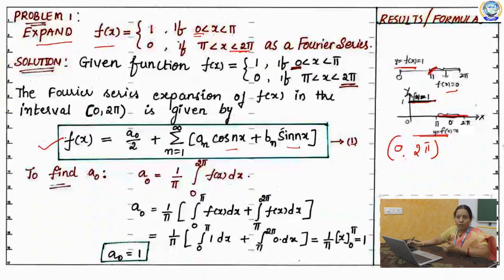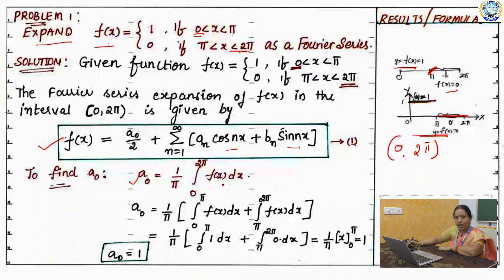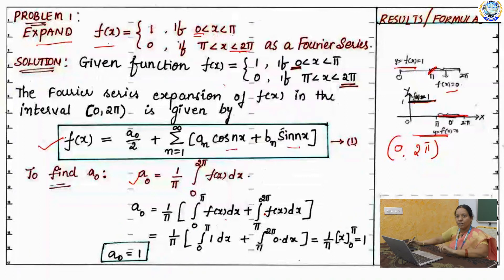Now we have to calculate a0, a_n, and b_n values. After that, we substitute these three coefficients in equation 1. The formula for a0 is 1 by pi integral 0 to 2 pi f of x dx. Since it is a discontinuous function splitted at pi, this integral is splitted into two parts: 1 by pi, integral 0 to pi f of x dx plus integral pi to 2 pi f of x dx.